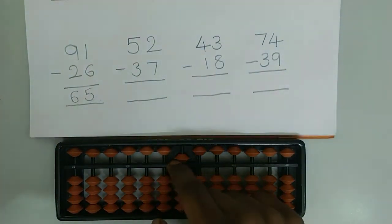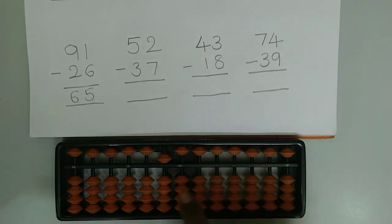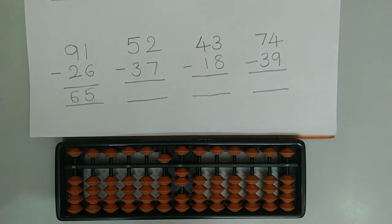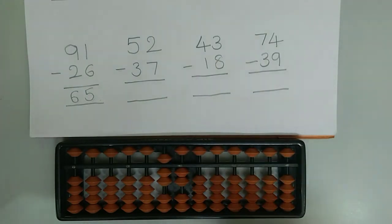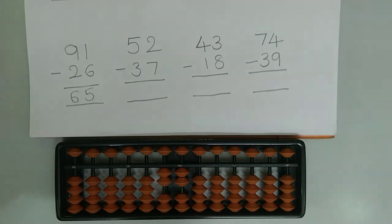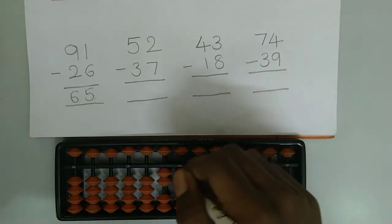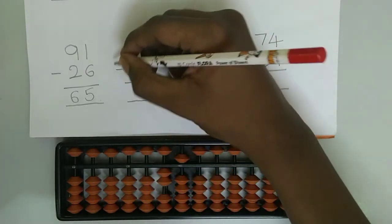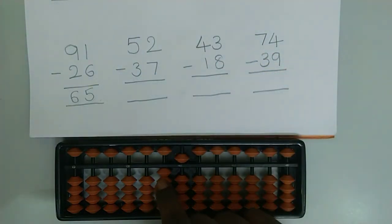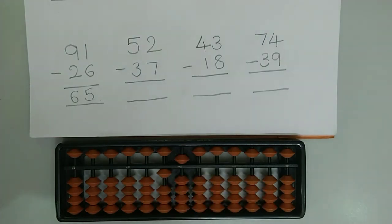Let's try the next example which is 52 minus 37. First we need to represent 52 on the abacus. First we need to subtract 3 from the tens rod. For that we use the small friend concept. The friend of 3 is 2, so we need to add 2 and subtract the small boss which is 5. Now we need to subtract 7 in the ones rod. The friend of 7 is 3, so we need to add 3 because the formula for subtraction is plus friend. To add 3 to 2 we use the small friend concept. The small friend of 3 is 2, so we subtract 2 and add the small boss which is 5. And at the end we should not forget to subtract the big friend boss which is 10. The final answer is 15.